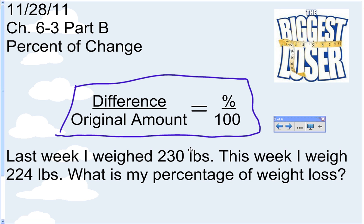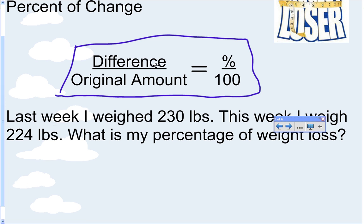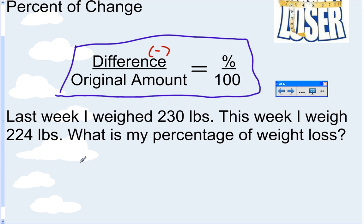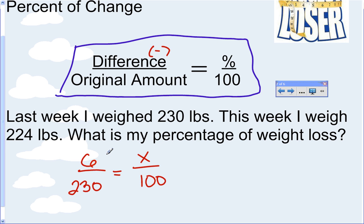So you can't just measure how much weight you've lost — you have to measure your percent of weight loss. The example here says: last week I weighed 230 pounds, this week I weigh 224 pounds. What is my percentage of weight loss? Difference means subtract, so we subtract 230 minus 224 to get 6. The original weight — the starting weight — is 230 pounds. We're trying to find percent, and x is always going to be above 100.